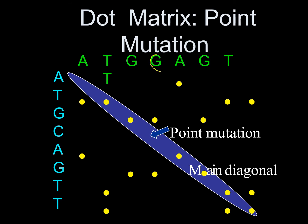According to point mutation, if any sequences are removed, left vacant, or substituted with other base pairs, we find that some points have no dots. Previously those positions had dots in the original sequence, but the mutated sequences now don't have dots due to substitution, deletion, or addition of base pairs. The points that don't have dots compared to the original sequence are known as point mutations.